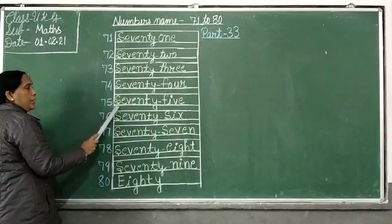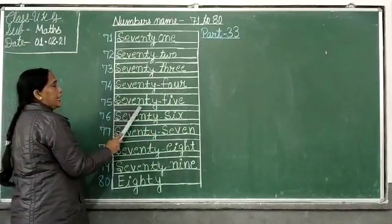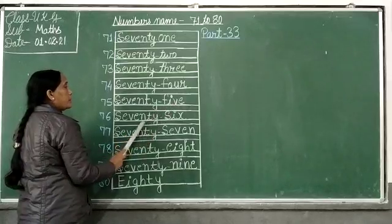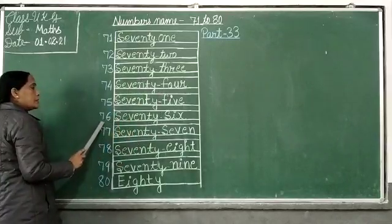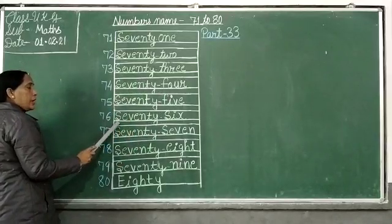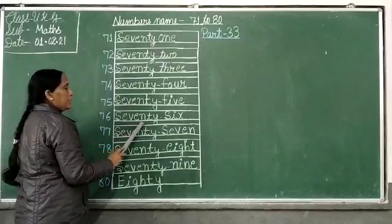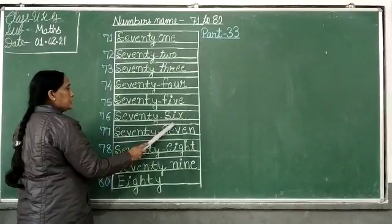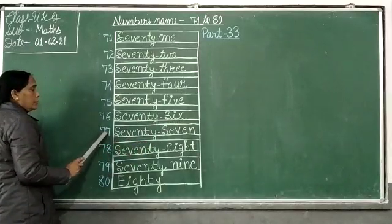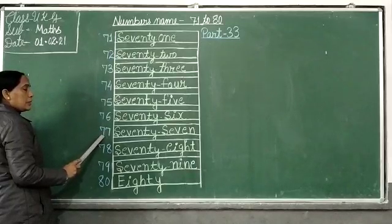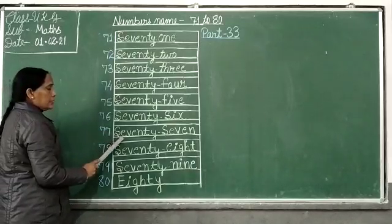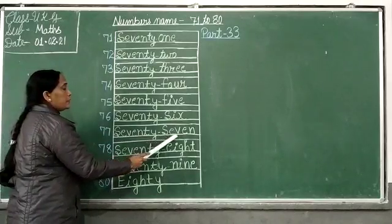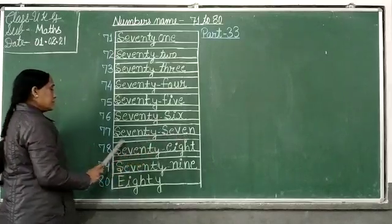75: S-E-V-E-N-T-Y 70. Seventy. S-E-V-E-N-7, 77.